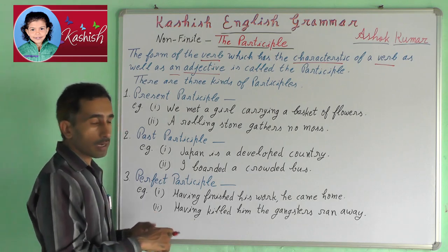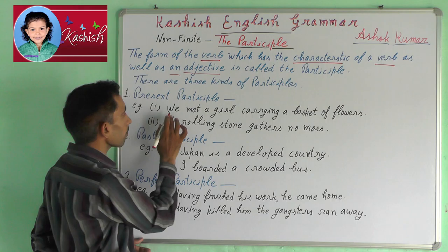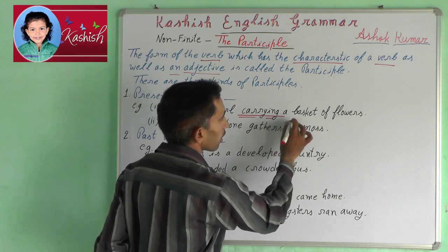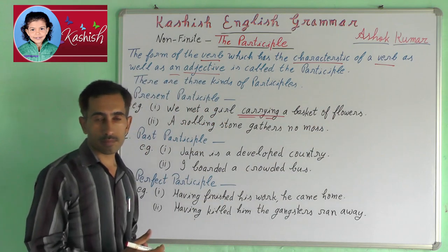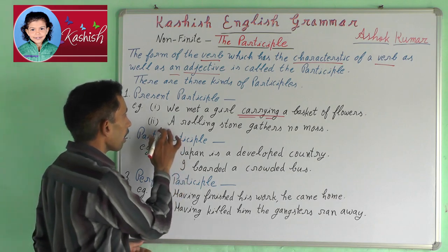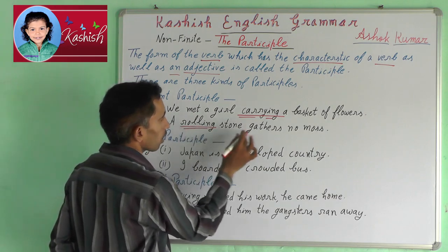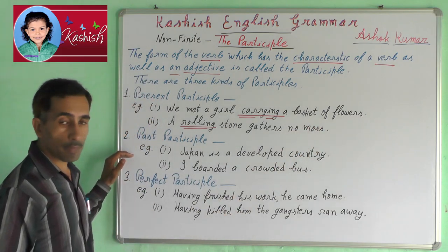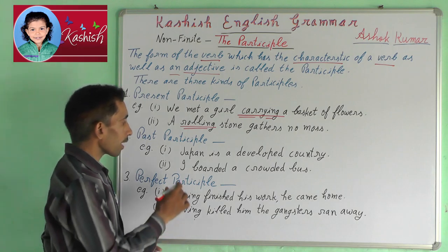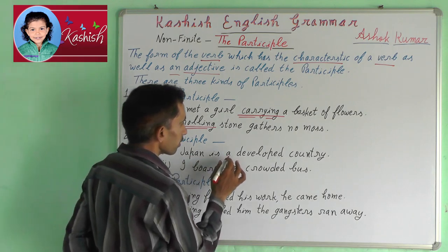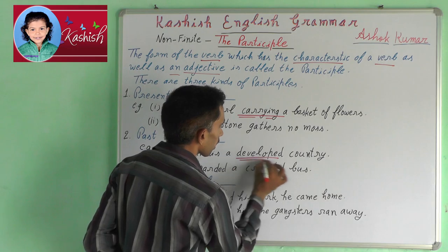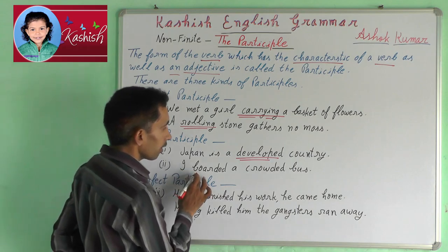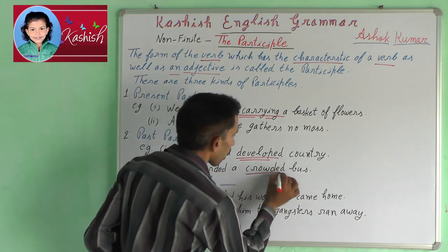Present participle — for example: 'We met a girl carrying a basket of flowers.' Next: 'A rolling stone gathers no moss.' Past participle — for example: 'Japan is a developed country.' Next: 'I boarded a crowded bus.'